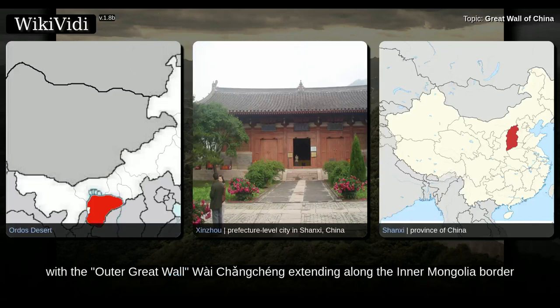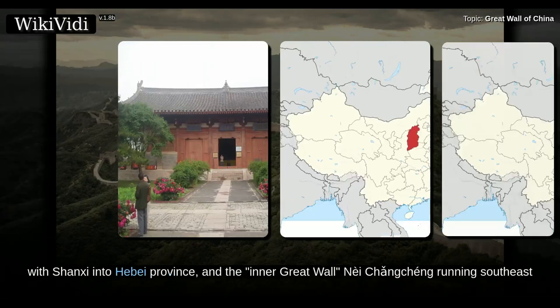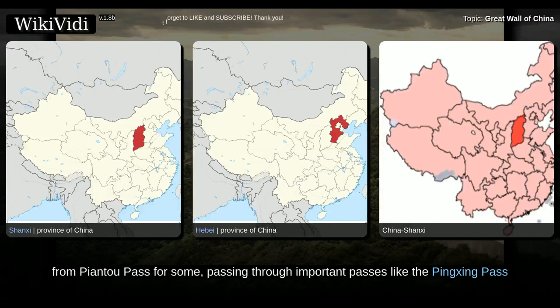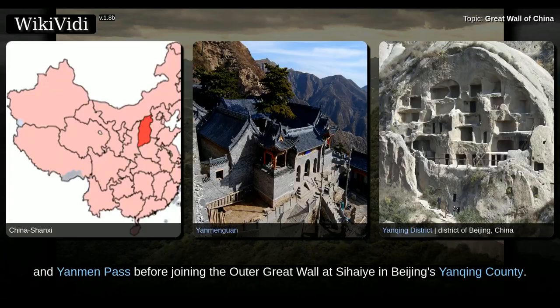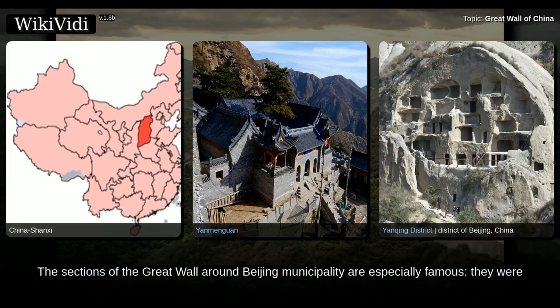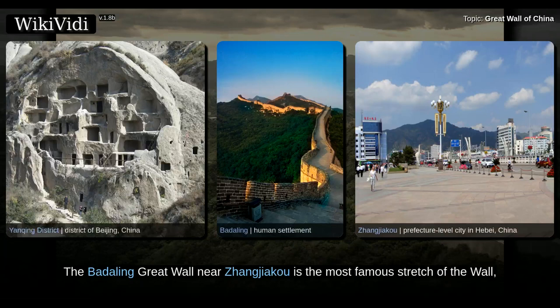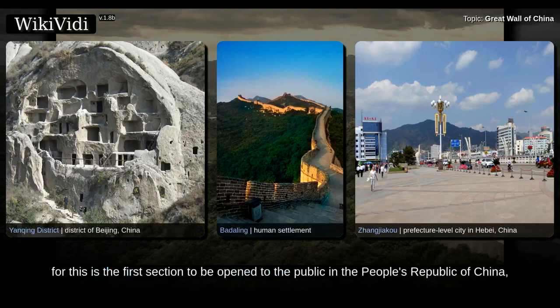Here the first major walls erected during the Ming Dynasty cut through the Ordos desert to the eastern edge of the Yellow River loop. There, at Piantou Pass in Xinzhou, Shanxi Province, the Great Wall splits in two, with the Outer Great Wall extending along the Inner Mongolia border with Shanxi into Hebei Province, and the Inner Great Wall running southeast from Piantou Pass, passing through important passes like the Pingxing Pass and Yanmen Pass, before joining the Outer Great Wall at Sihetai in Beijing's Yangqing County. The sections of the Great Wall around Beijing municipality are especially famous — frequently renovated and regularly visited by tourists today.